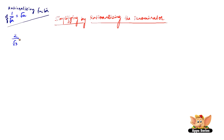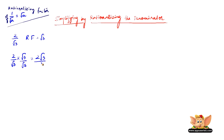So similarly, the rationalizing factor of 2 by root 3 is root 3. Let me abbreviate rationalizing factor as RF. So here RF is equal to root 3. Therefore, all we have to do is multiply and divide 2 by root 3 by its rationalizing factor, which is root 3. So here we have 2 root 3 by root 3 into root 3, which is 3. So 2 root 3 by 3 is the simplified form of 2 by root 3.